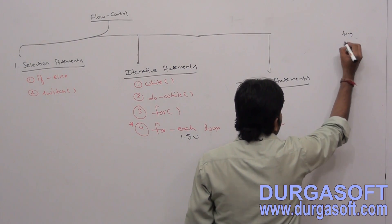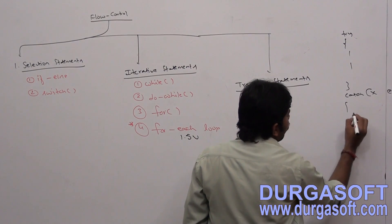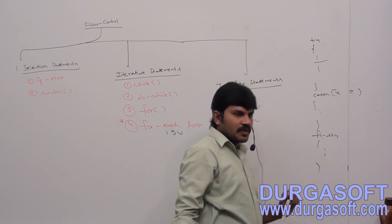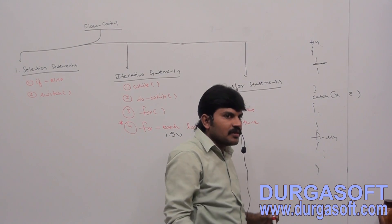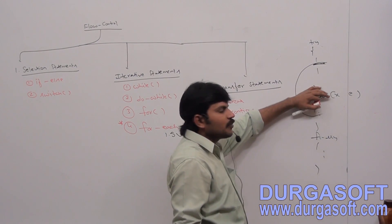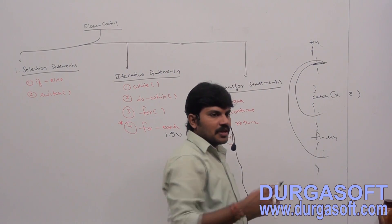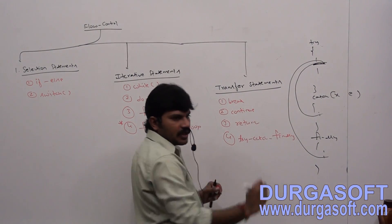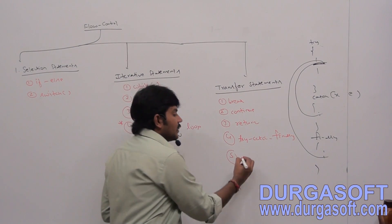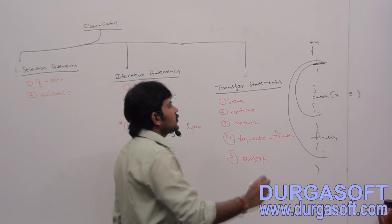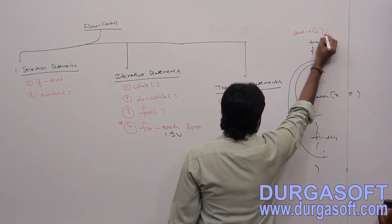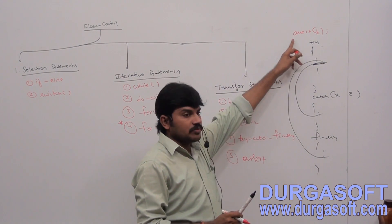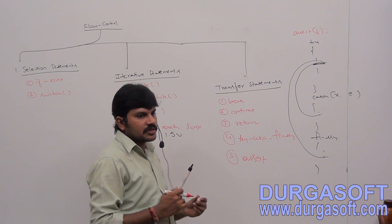Try-catch-finally is also a type of transfer statement. Within the try block, if an exception rises, immediately the control will be transferred to the catch block. After the catch block, control will be transferred to the finally block. Additionally, assert is also a type of transfer statement. If the assert condition fails, immediately the program will be stopped by raising an assertion error. Assert statement will be discussed in the assertions concept.